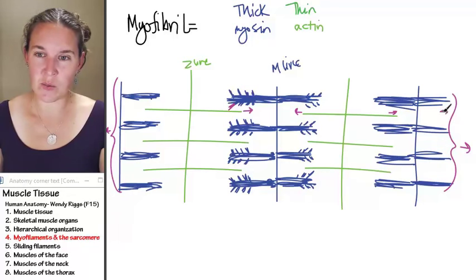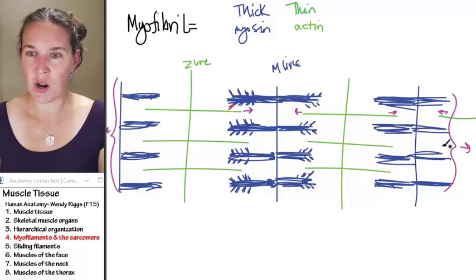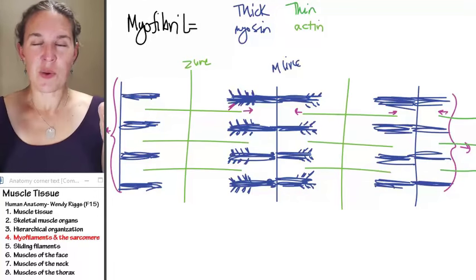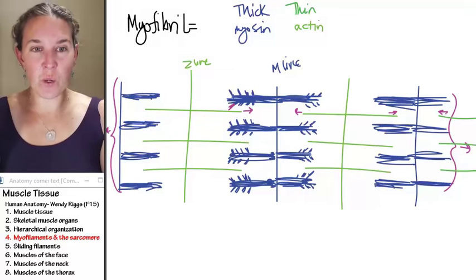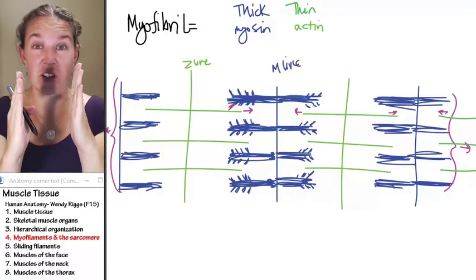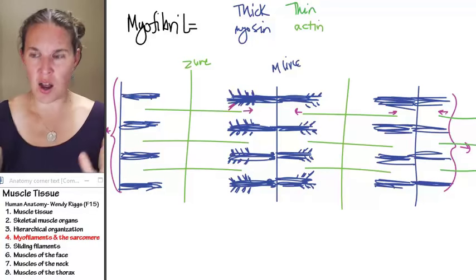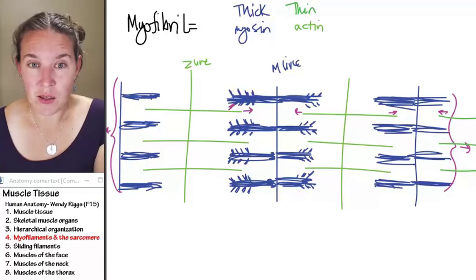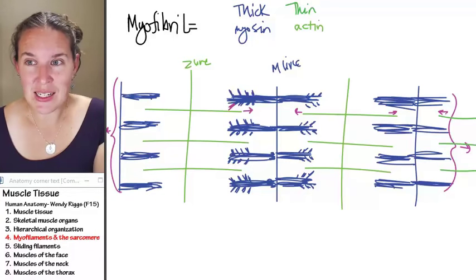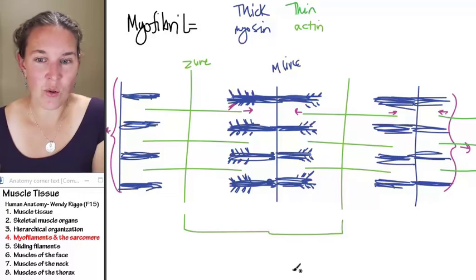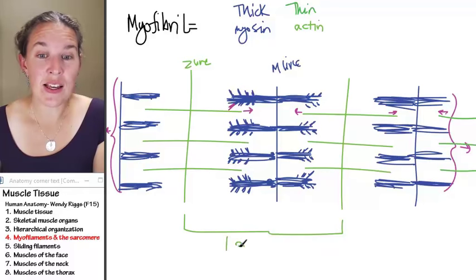If the thick filaments grab the thin filaments, we're actually going to shorten this thing. This whole thing from Z line to Z line - that whole thing is one sarcomere.